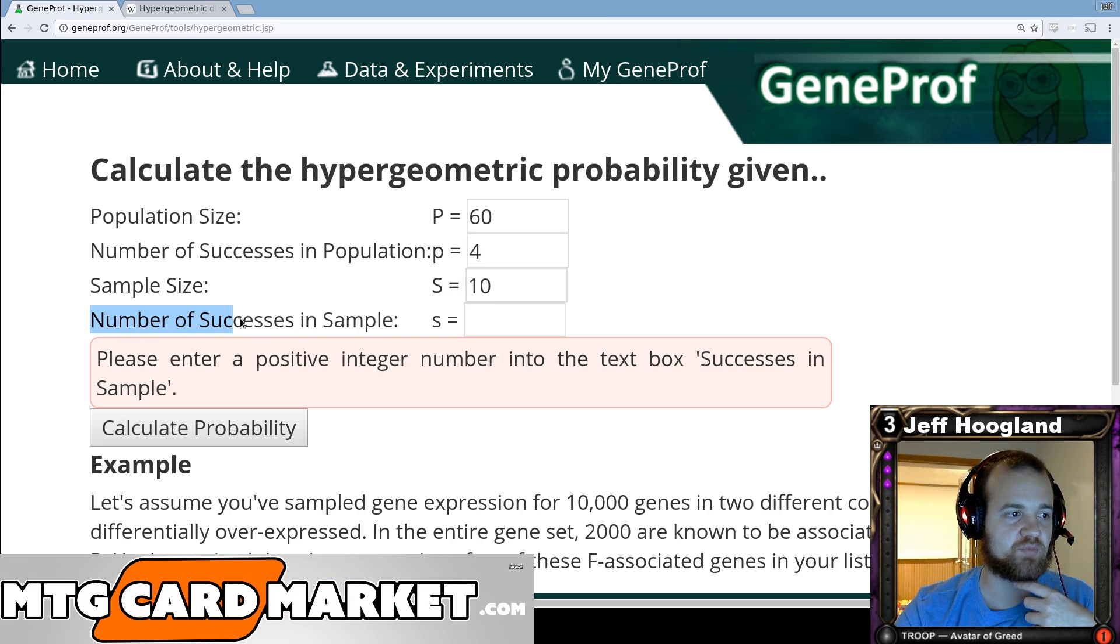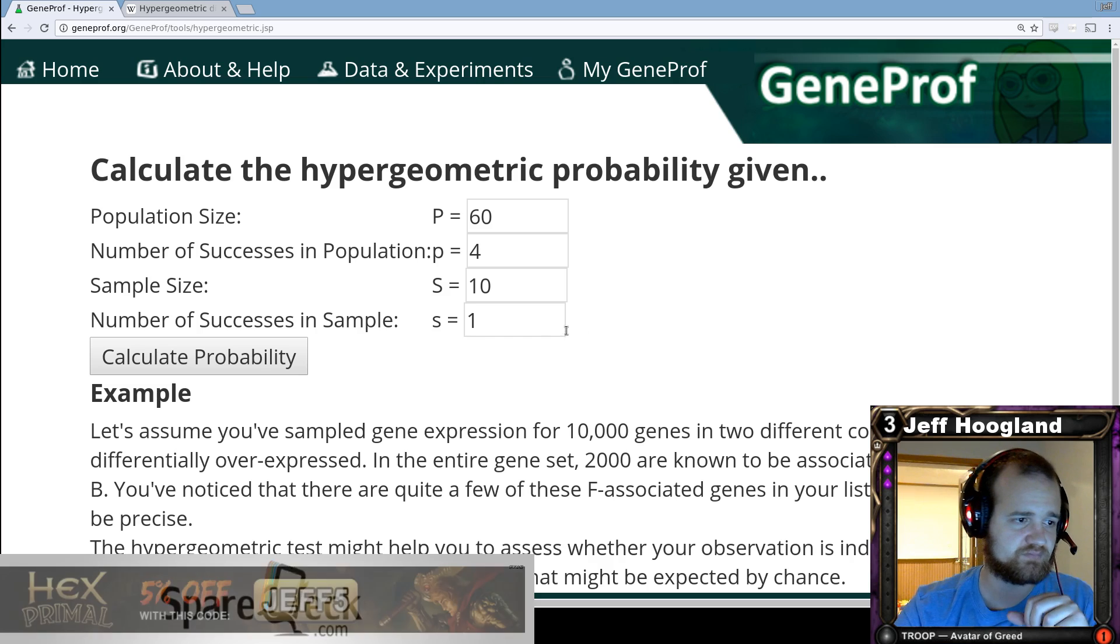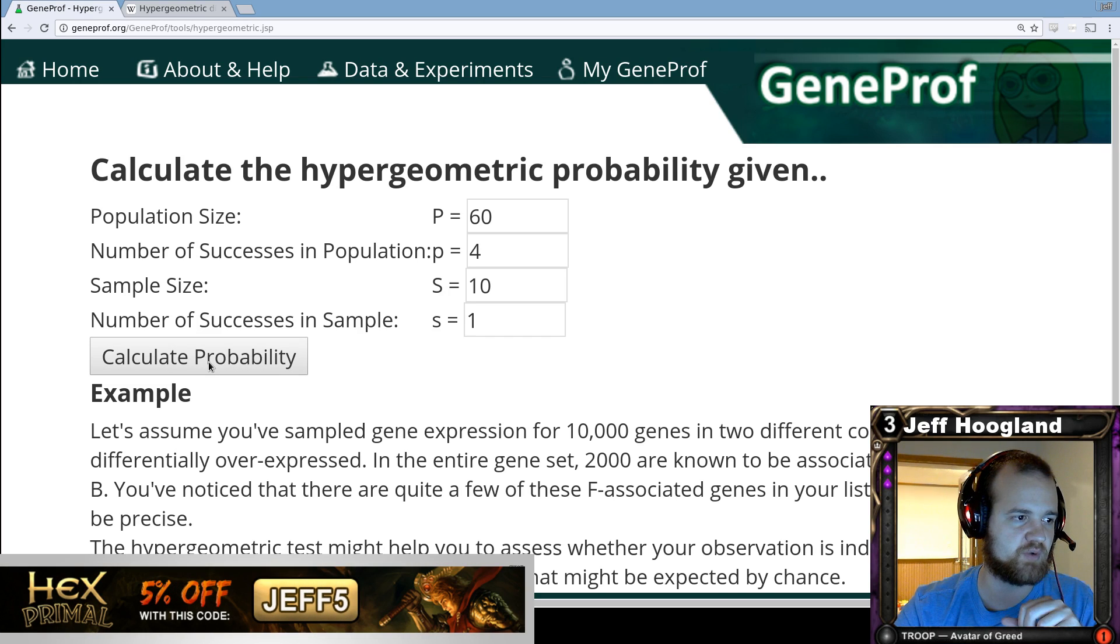And this last argument here is the number of successes in the sample. This means how many copies of the thing that we're looking to find do we want to calculate are in there. So we want to draw at least one copy of our card. So we'll put a one in here and then we'll ask it to calculate the probability.